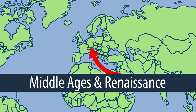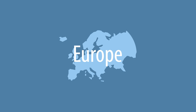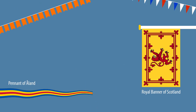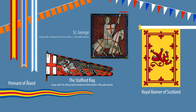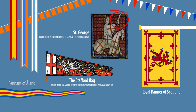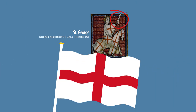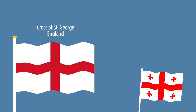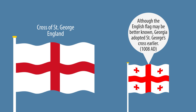In Europe, flags already existed in many forms, such as banners, pennons, streamers, and of course standards. Flags were used for many things, but the idea of a national flag was new and took hold. The cross of St. George being adopted as England's flag in the 13th century being a famous example.